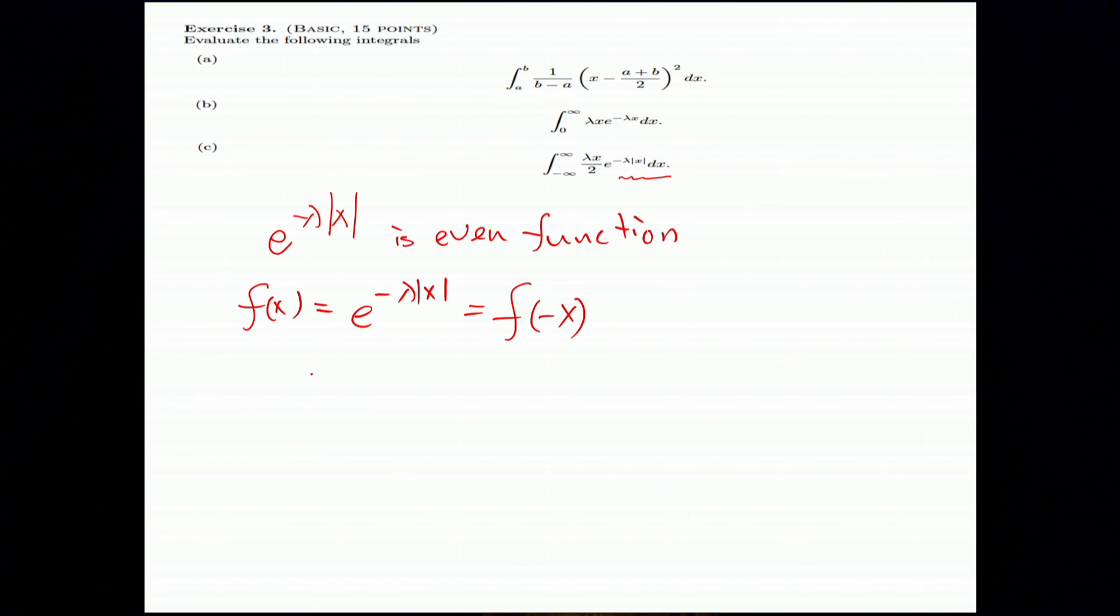Then the X times exponential to the minus lambda times the absolute X is an odd function. The odd function means, let me use g. g(x) equals this term, equals minus g of x. So, this is odd function. If I take the integral of odd function, this immediately goes to 0. That's it.